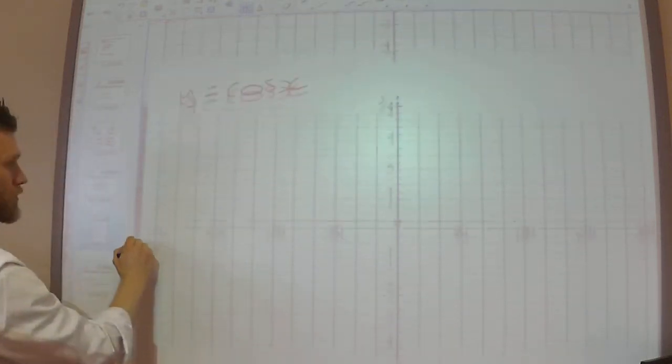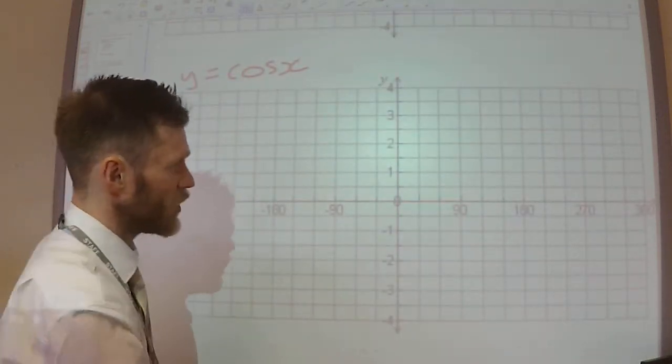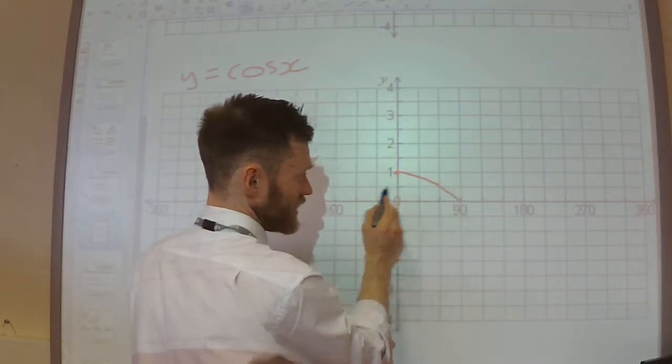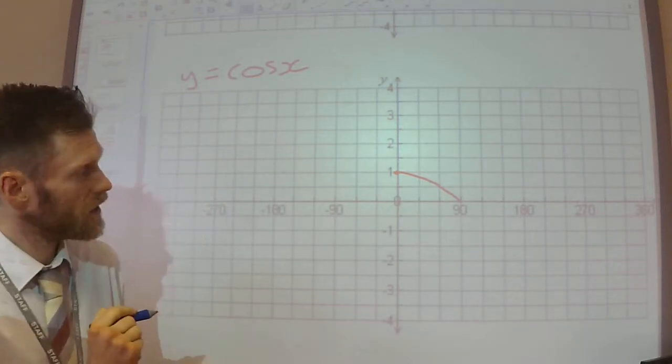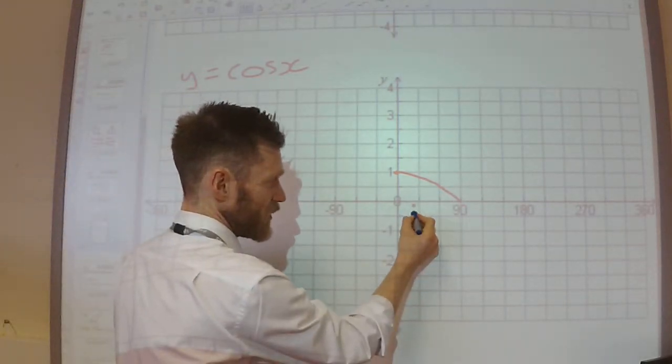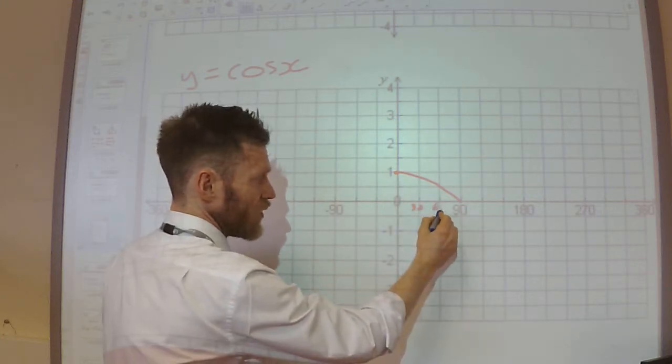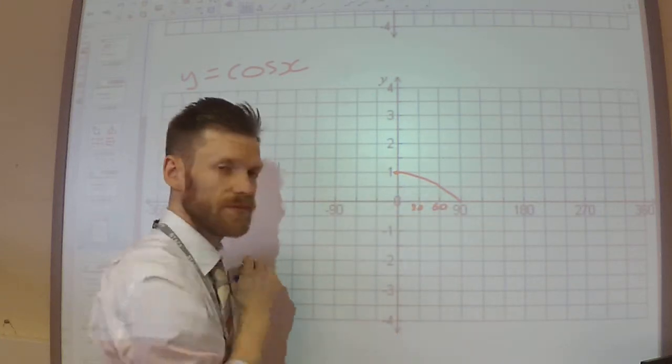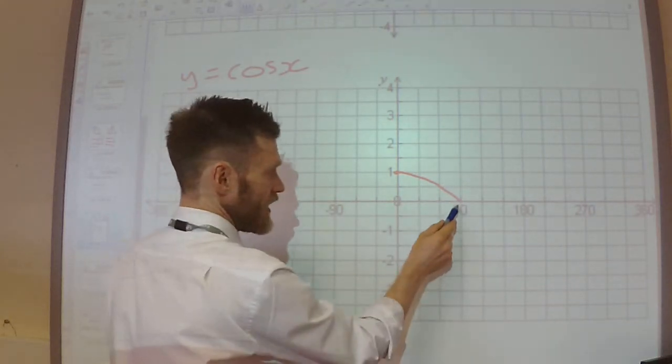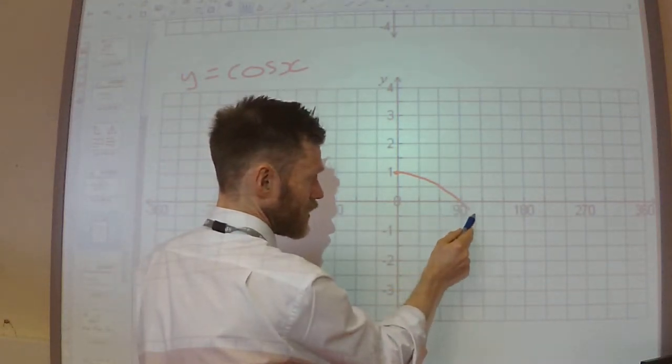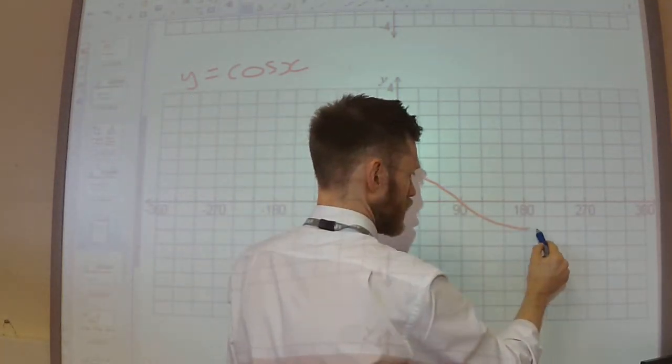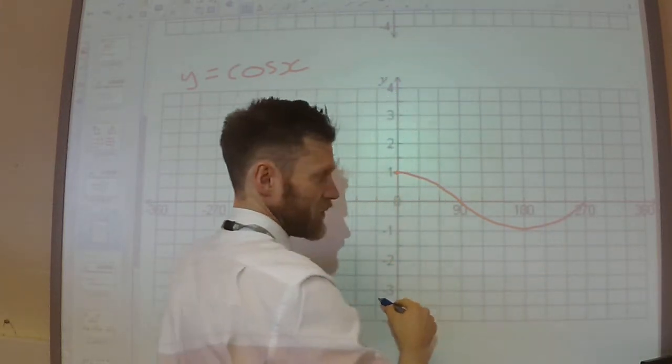Let's do cos. So we know cos starts at 1 and goes down to 0 at 90. Again, we could fill in these numbers here if we wanted to. We know cos 30 is root 3 over 2, we know cos 60 is a half. And then we know it goes down to minus 1 at 180, 0 at 270.